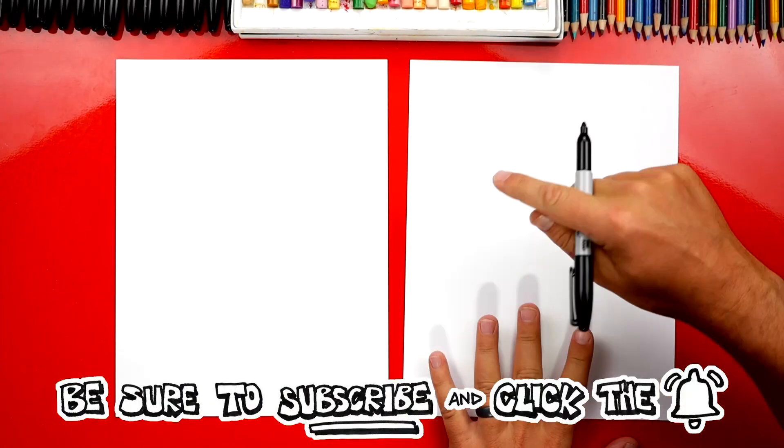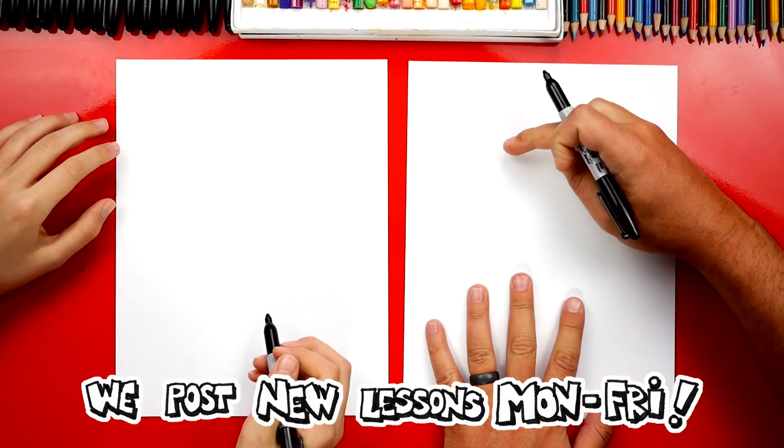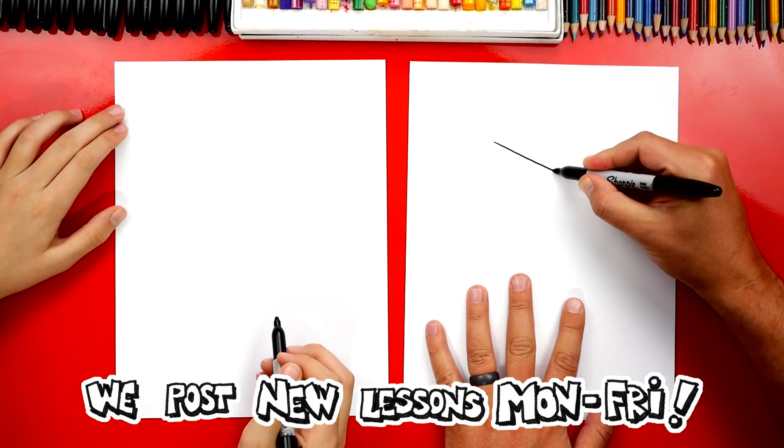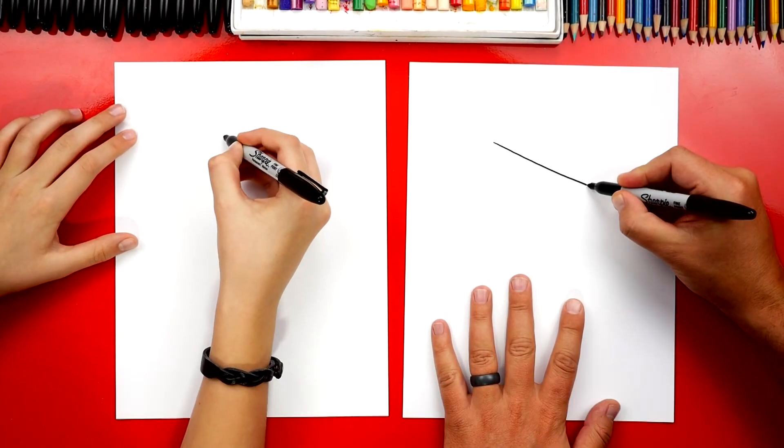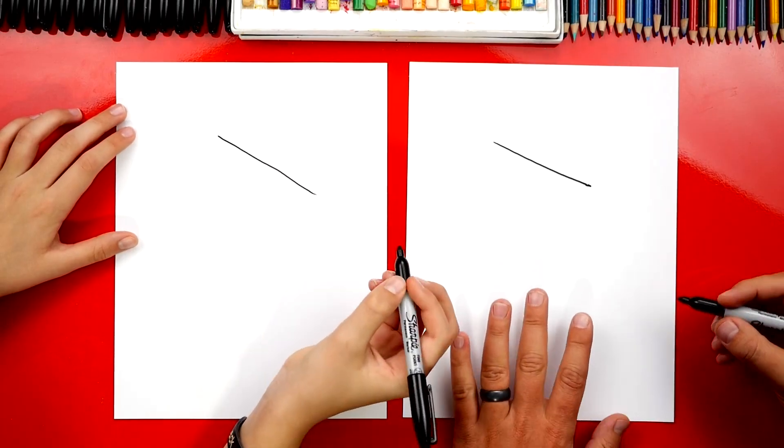First we're gonna draw the top of our stocking. We're gonna draw a diagonal line towards the top of our paper and in the middle. So I'm gonna draw a diagonal line like that. We don't want to draw it too long.